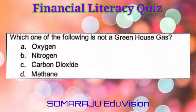Question number eighteen: Which one of the following is not a greenhouse gas? A. Oxygen, B. Nitrogen, C. Carbon dioxide, D. Methane. The correct answer is B. Nitrogen.